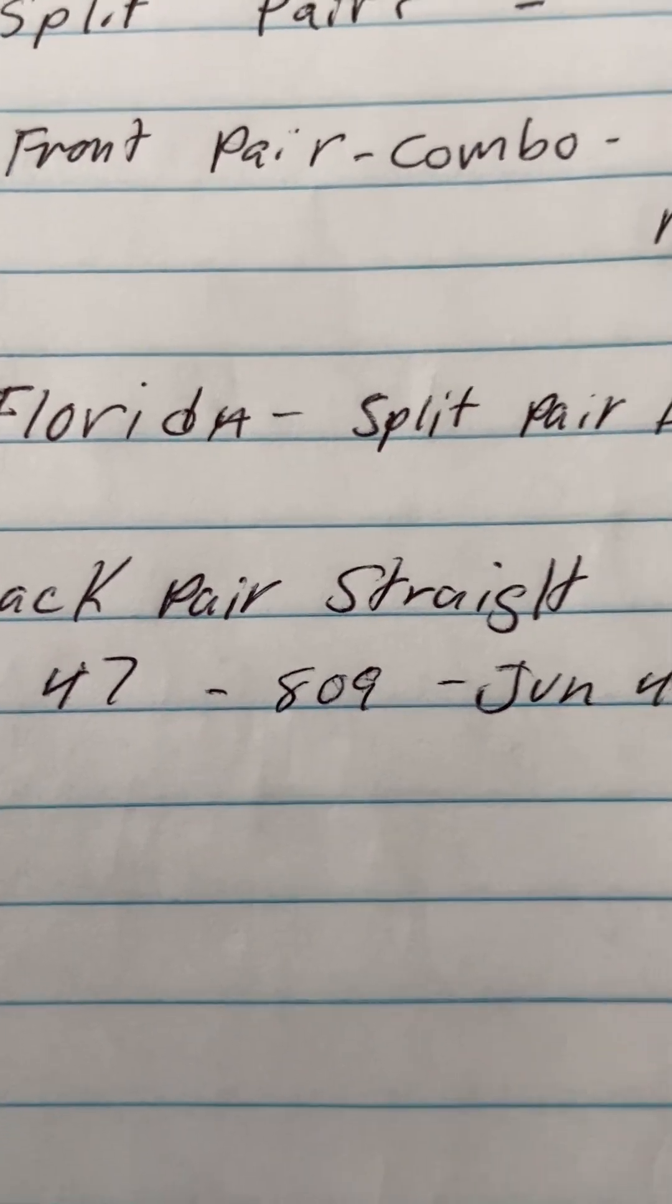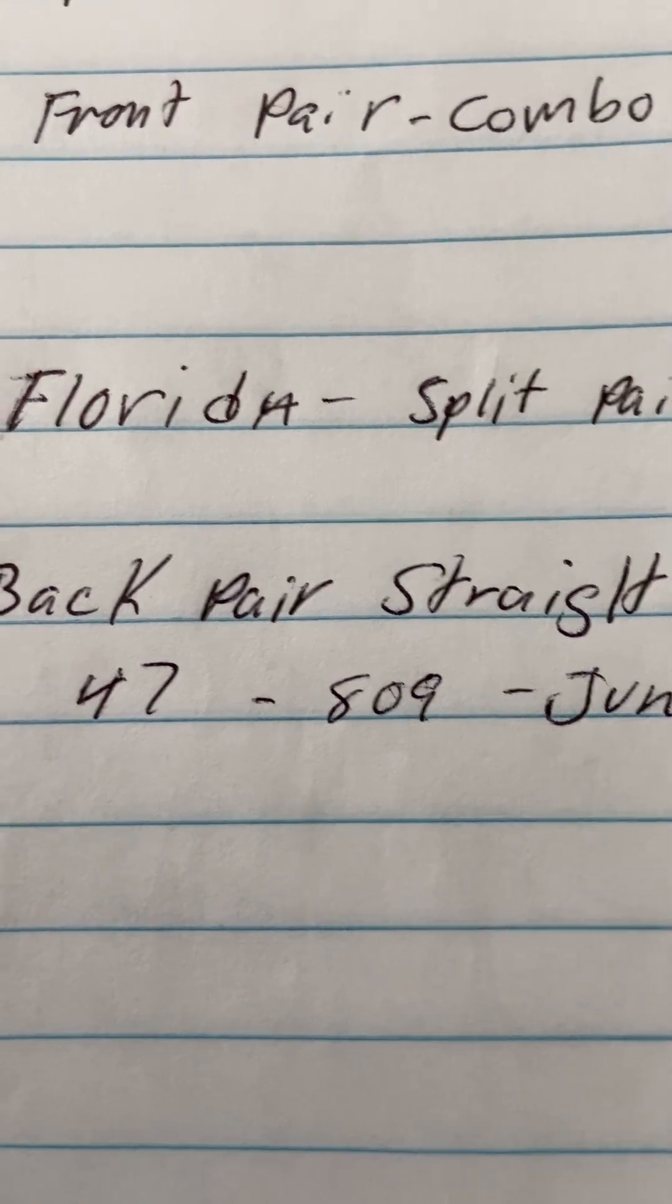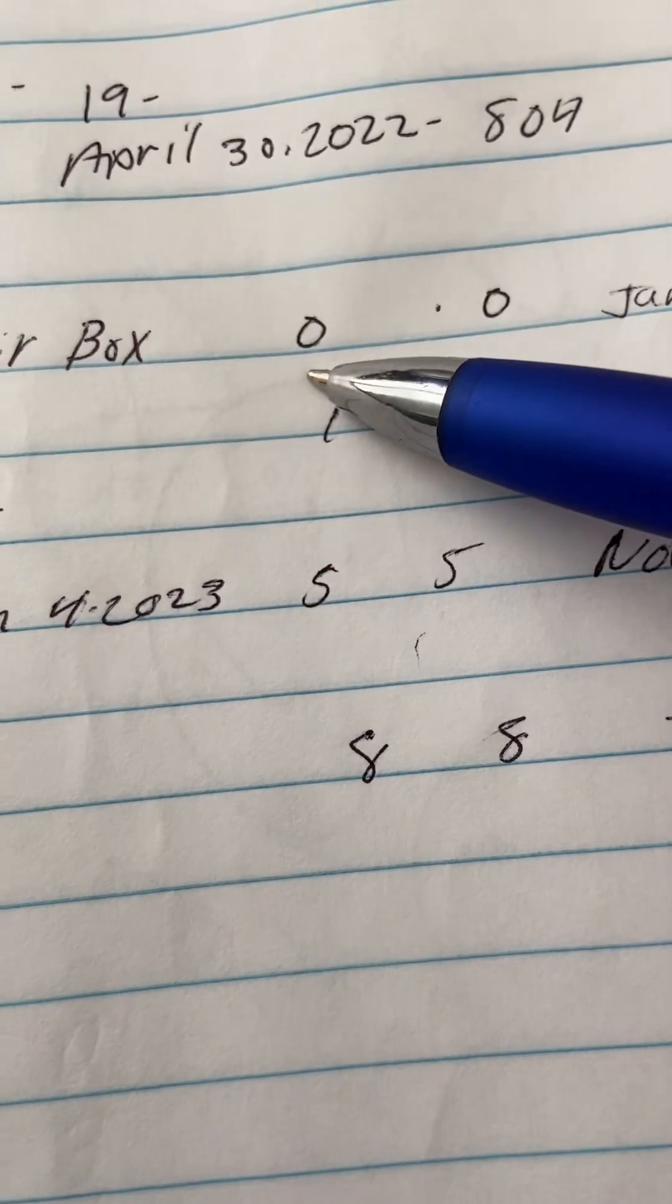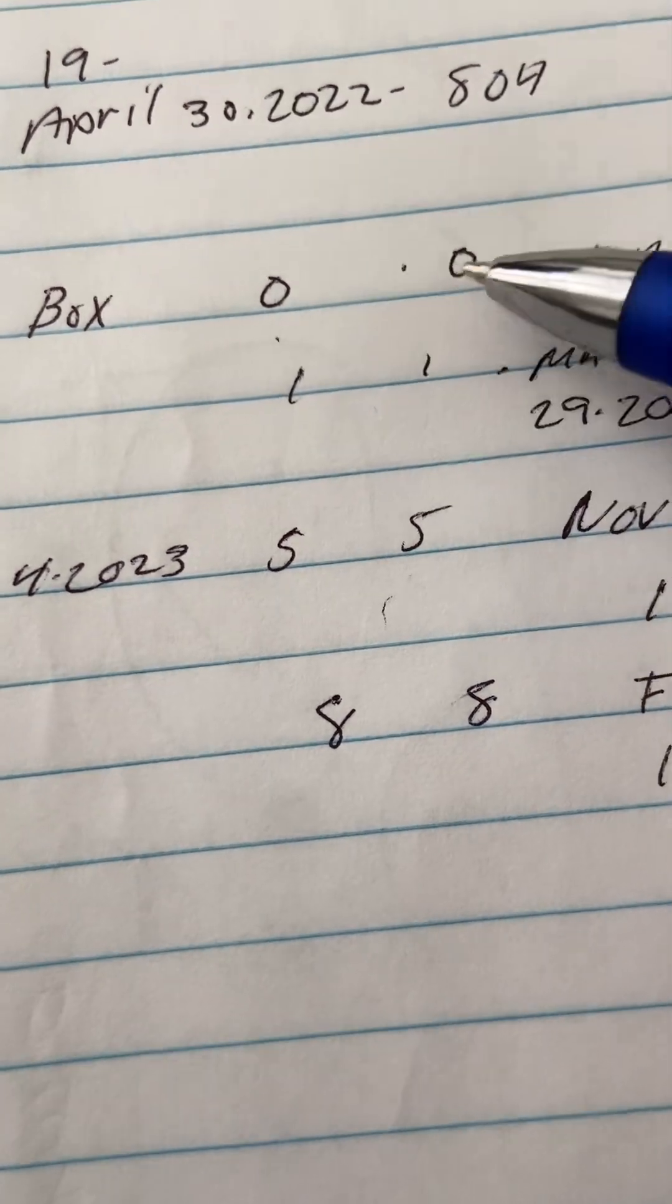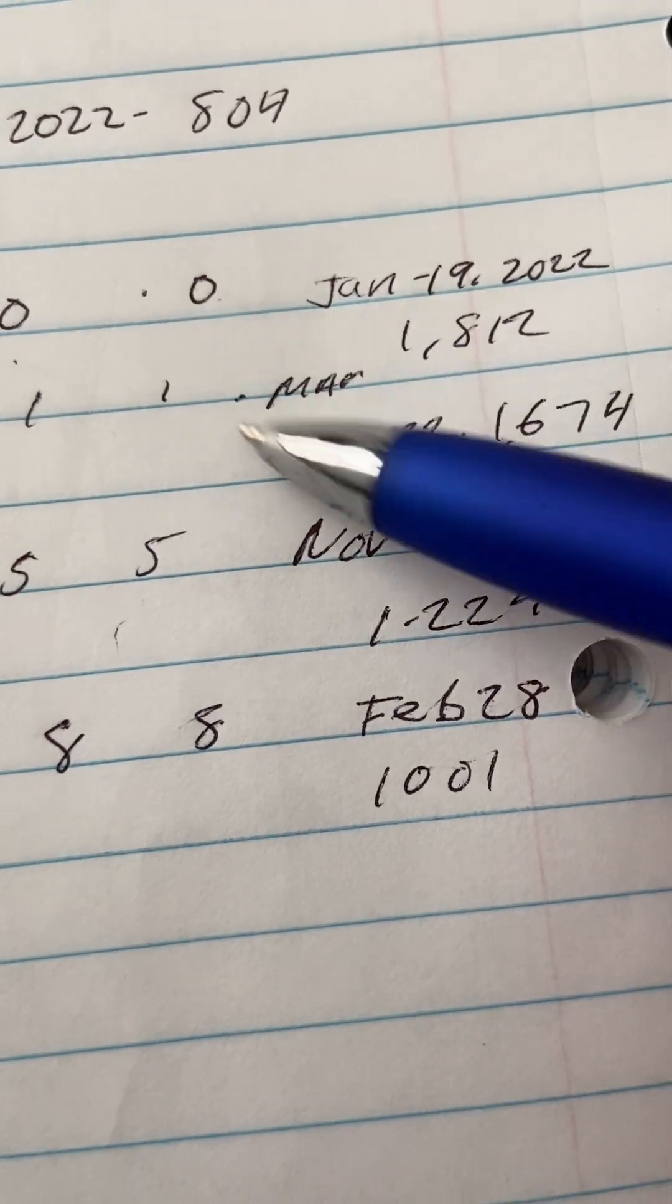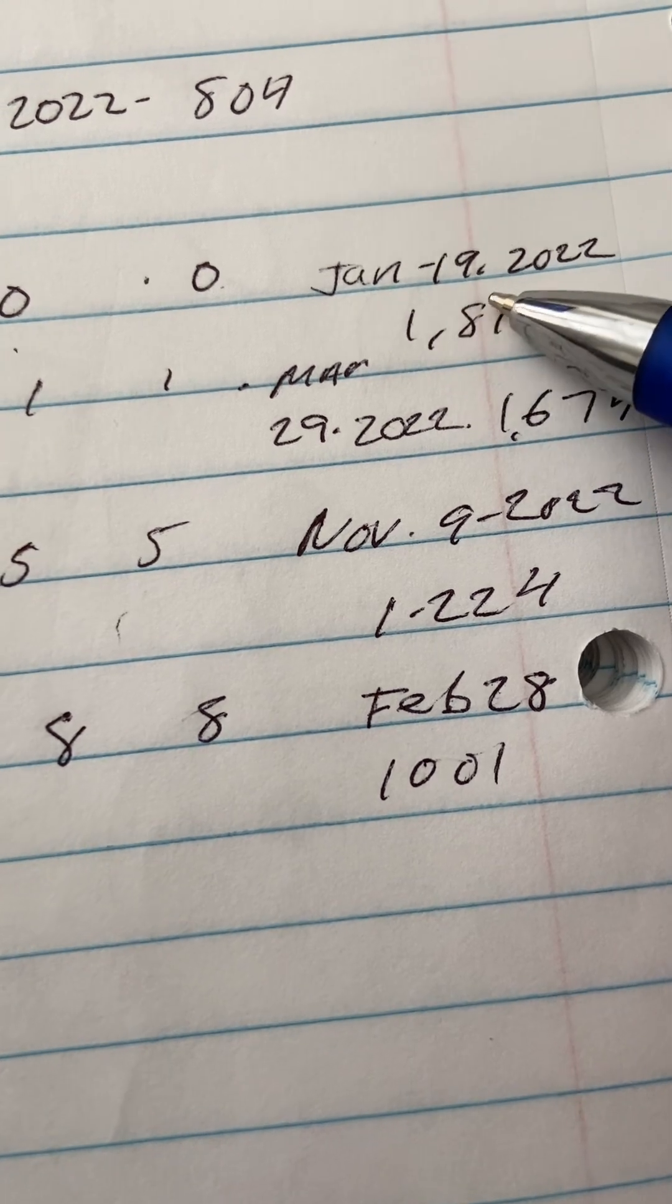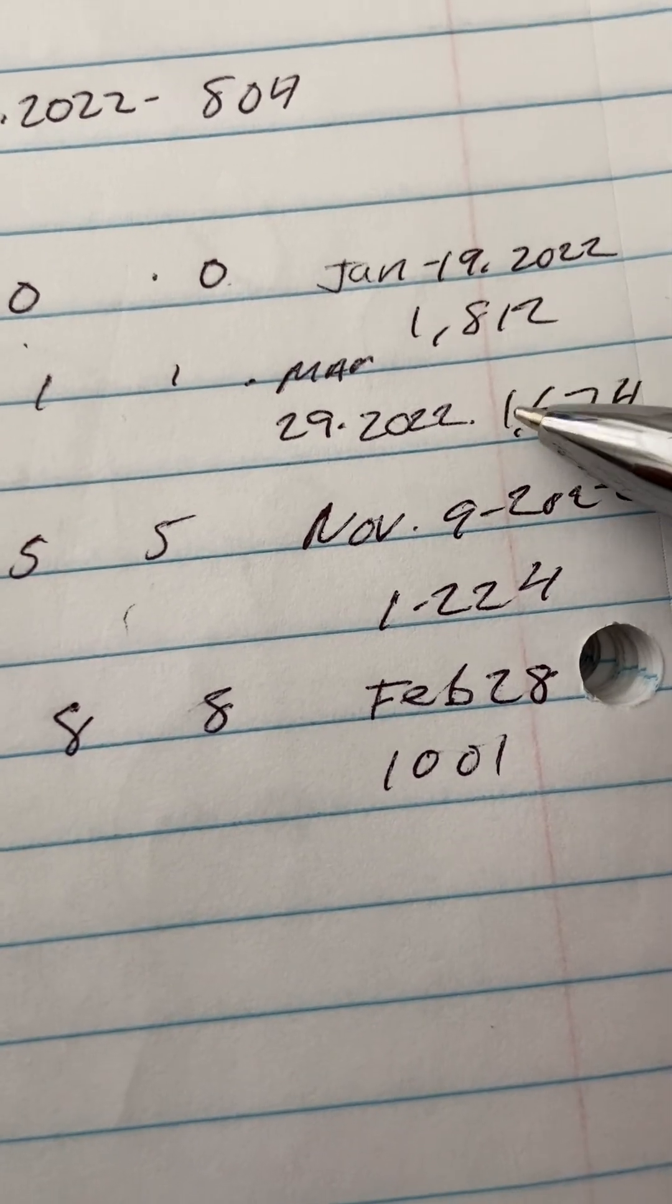Now earlier today, I said I didn't have no time to check your pairs and all those things. So Florida, your split pairs - you know what that mean, right? Meaning your first number and your third number, something's going to go in the middle. But your split pair box, 0-0 is way overdue, last seen January 19th, 2022. Right now as I'm talking on this Saturday, is 1,812 draws out.